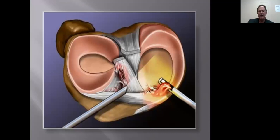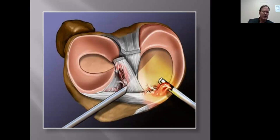We do these arthroscopically under local, sedation, or sometimes general anesthesia, depending on the individual. It's a 15-minute procedure through two Band-Aid-sized incisions. In somebody younger, we generally recommend doing this if there's a tear. If somebody is older, you decide whether the symptoms warrant it. If someone is 60 years old and has an MRI showing a tear but no symptoms, you don't necessarily need to fix every tear.